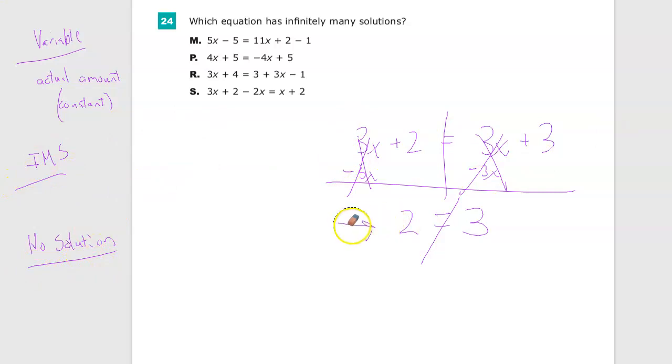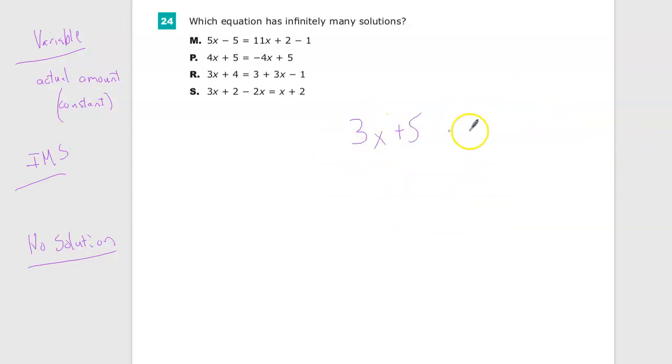Infinitely many solutions is similar, except you end up with a statement that's true. So 3x plus 5 equals 3x plus 5. And I subtract 3x from both sides in order to eliminate it. And I'm left with 5 is equal to 5, which means I can make x anything I want and it's always going to be true because they balance each other out on the same side. If x is a million, I end up with 3 million plus 5 equals 3 million plus 5 on both sides, which is true because 3 million plus 5 is equal to 3 million plus 5.